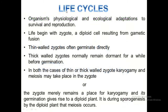Before we start our lecture we must know the meaning of life cycle or life history. This term may be defined as the sum of an organism's adaptations to their survival and reproduction, which include physiological as well as ecological considerations. The growth and development of an algae proceed through a number of different morphological and cytological stages, and this sequential change is termed as life cycle or life history. Like many other organisms, an algae's life also begins with the zygote, which is a diploid cell resulting from a gametic fusion.